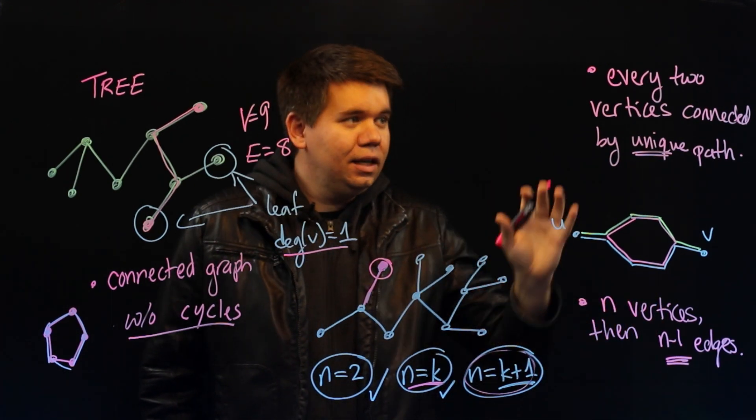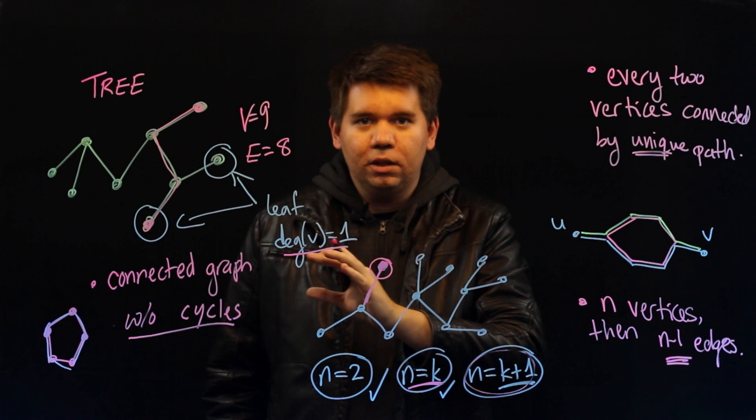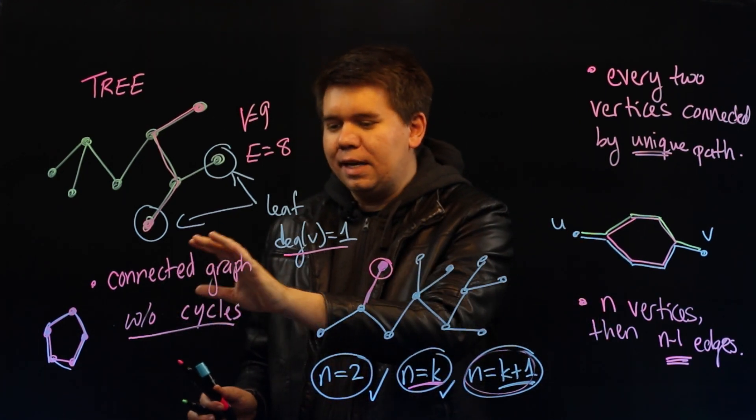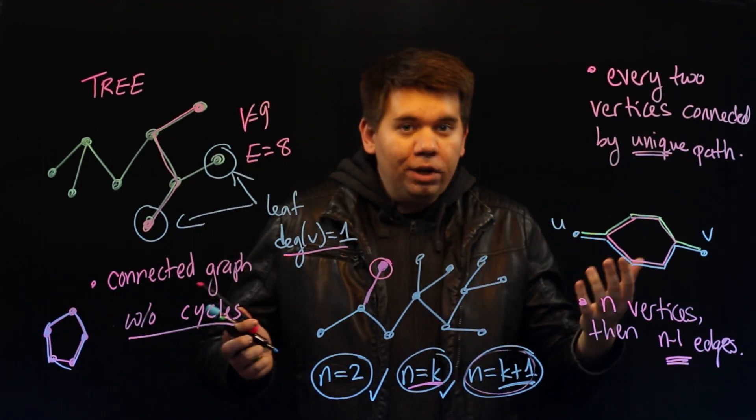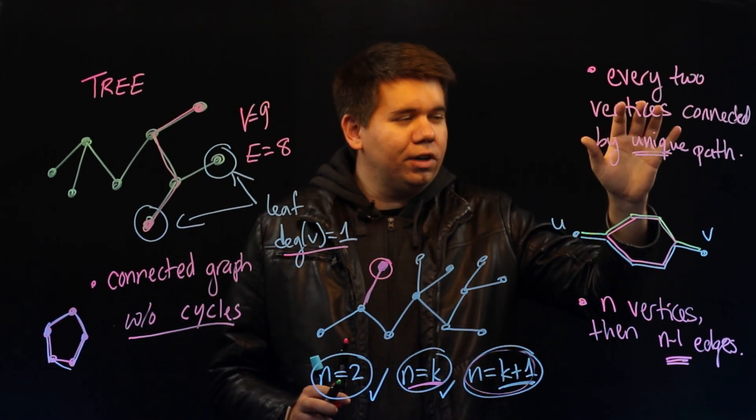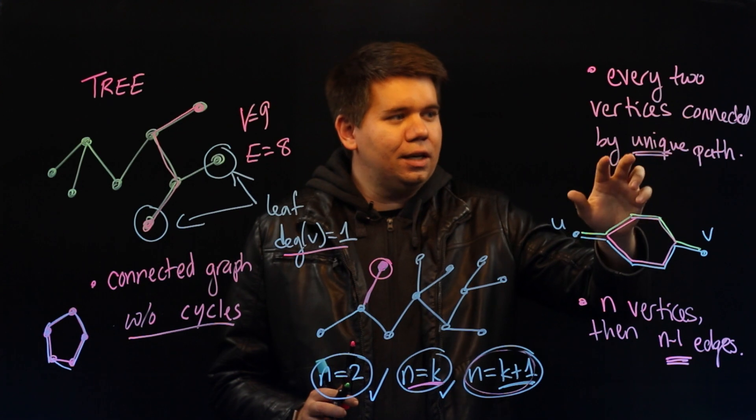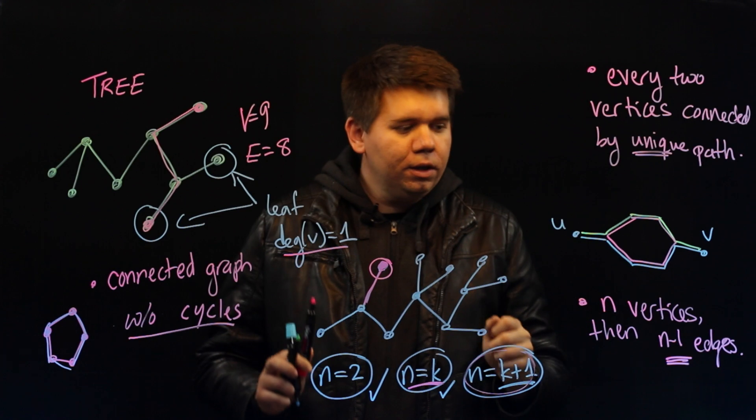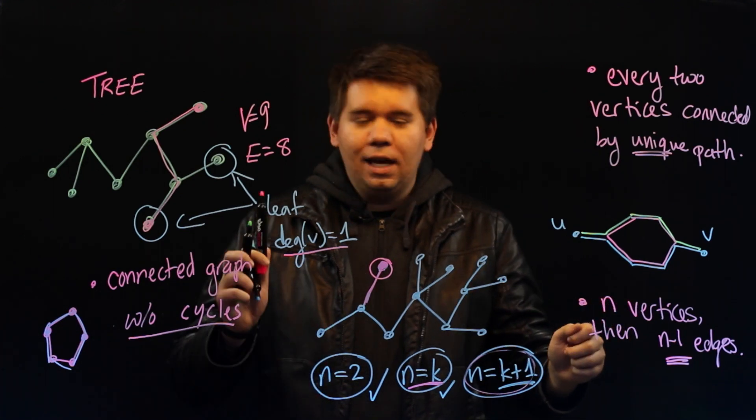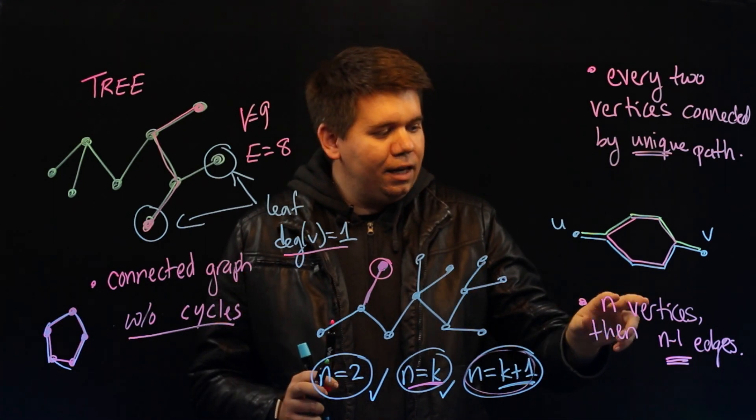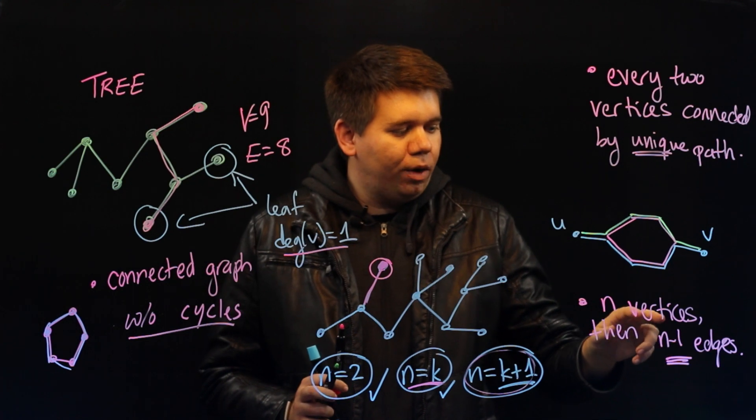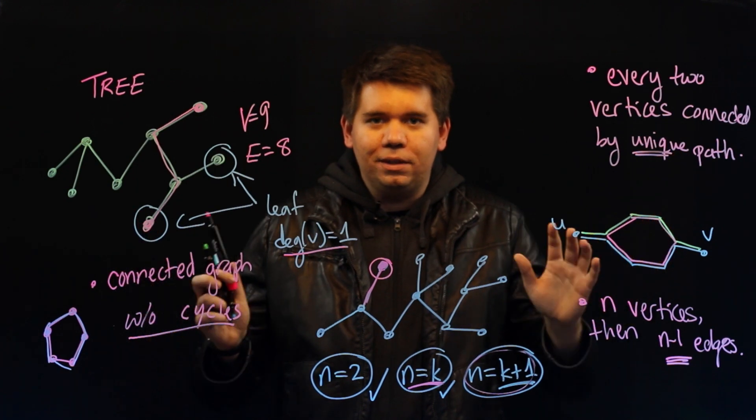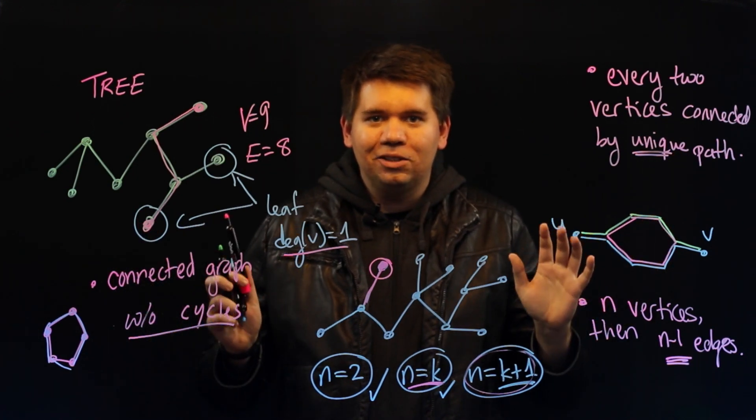In fact each of these properties of trees, any of them could have been our definition. Instead of defining a tree as a connected graph without cycles, we could have defined a tree to be a graph where every two vertices are connected by a unique path. And then we could have proved these other properties. Or we could have started the definition that a tree is a graph that has n vertices and n minus 1 edges. And then we could have proved the other properties. These are all equivalent statements about trees.